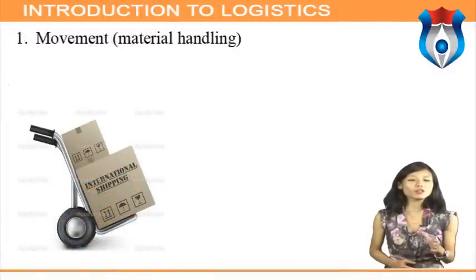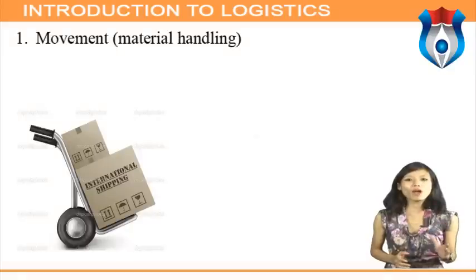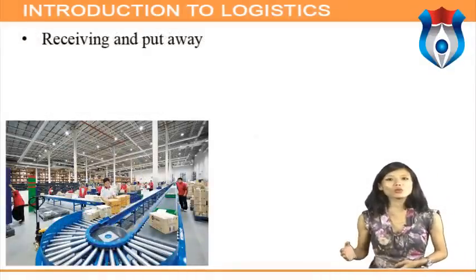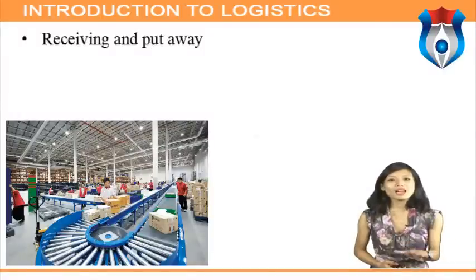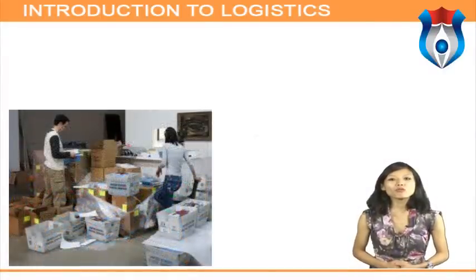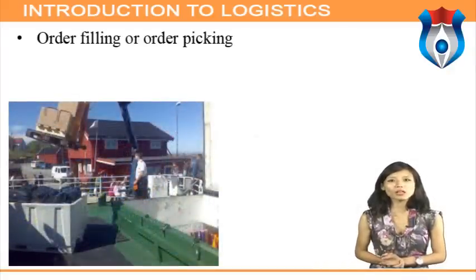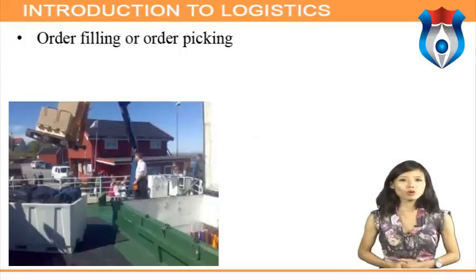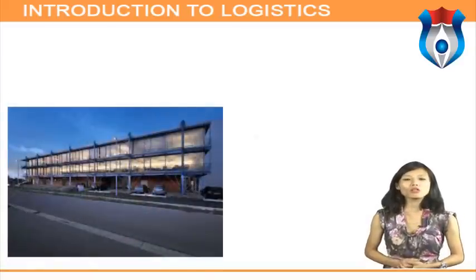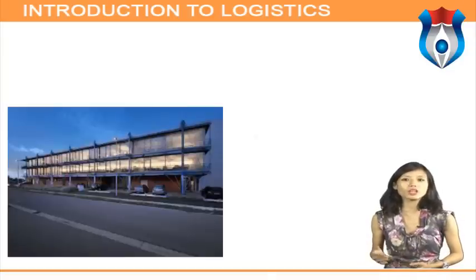Warehousing functions can be categorized under three basic functions. Movement/material handling is represented by four primary activities. First, receiving and put-away — this includes unloading goods from transportation equipment, verifying count and specifications against order records, inspecting for damage, updating warehouse inventory records, and physically moving products to storage areas or consolidation areas. Second, order filling or order picking — a fundamental movement activity involving identifying and retrieving products from storage according to customer orders, accumulating, regrouping, and packaging products into customer-desired assortments, and generating packing slips.